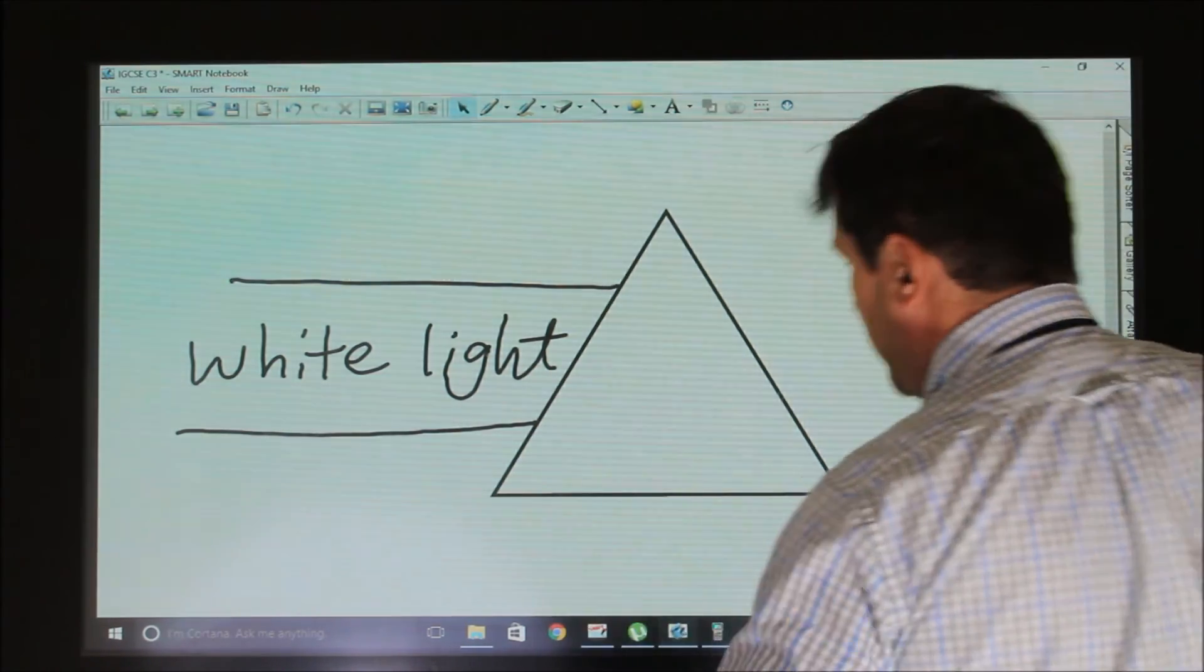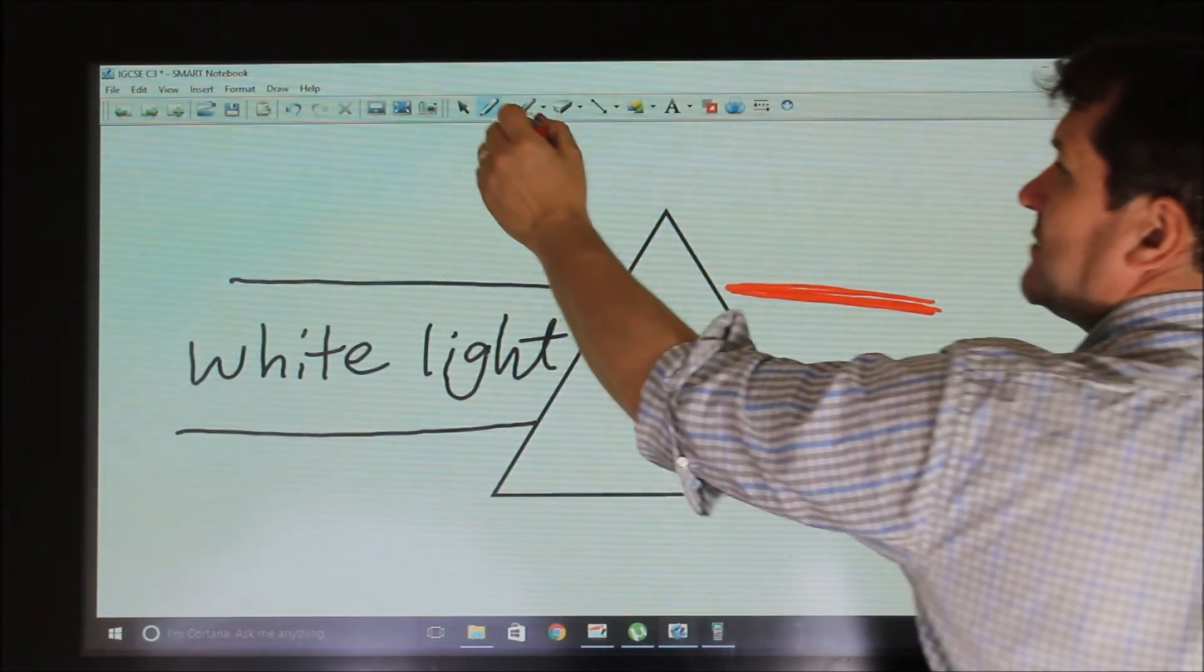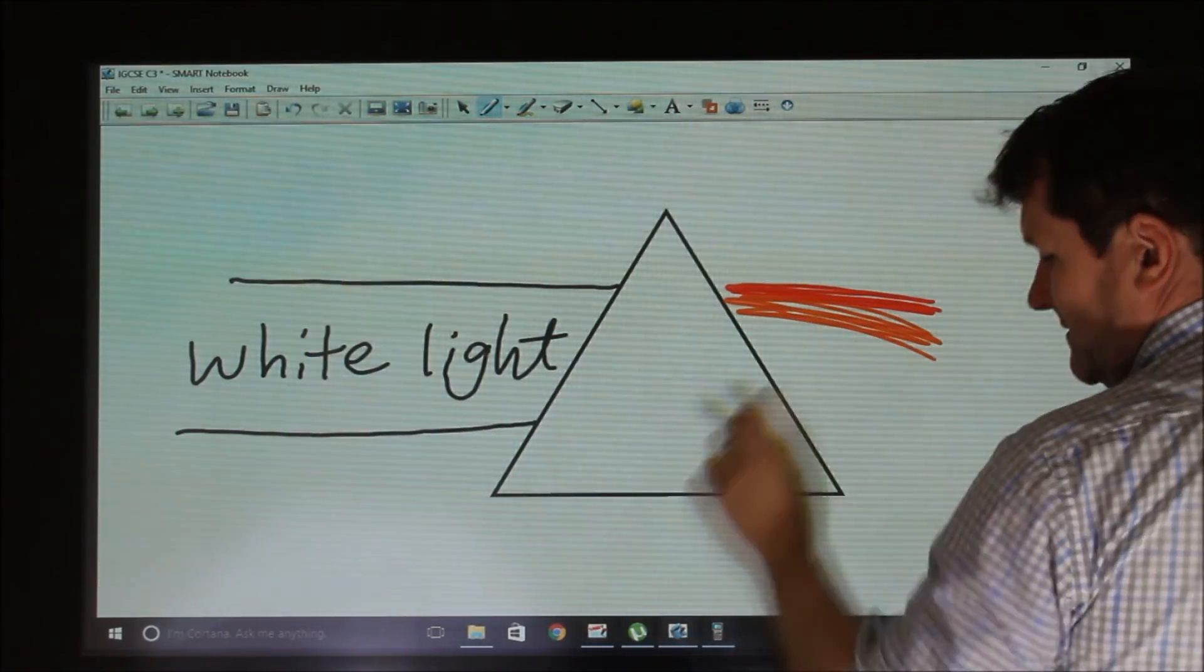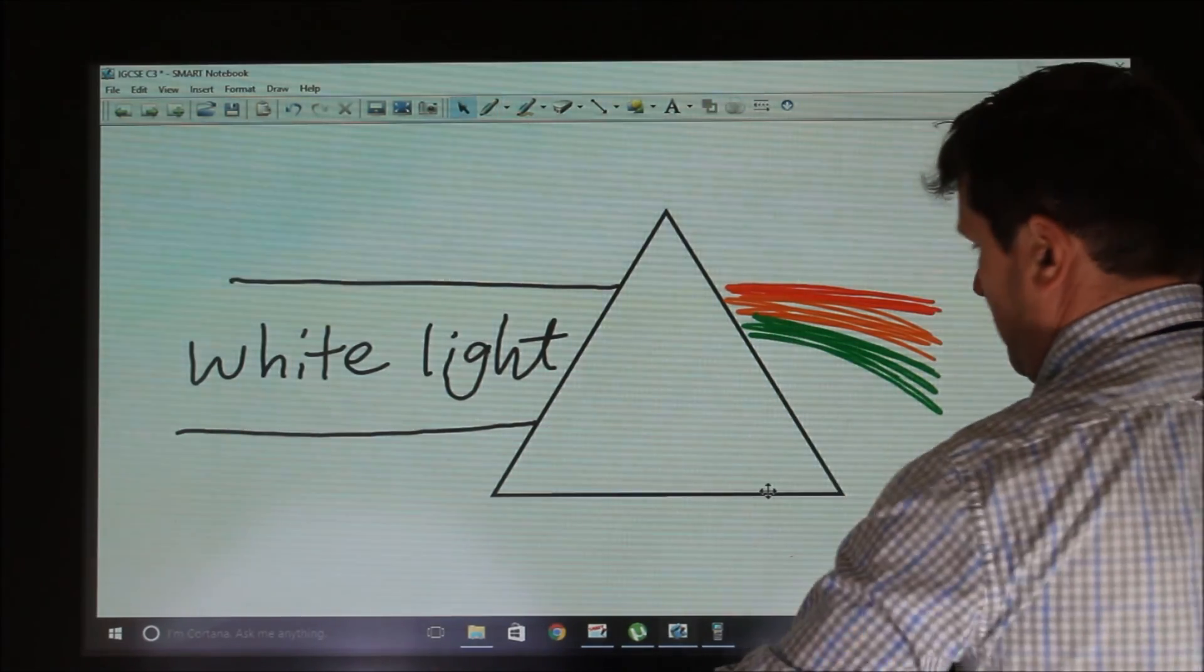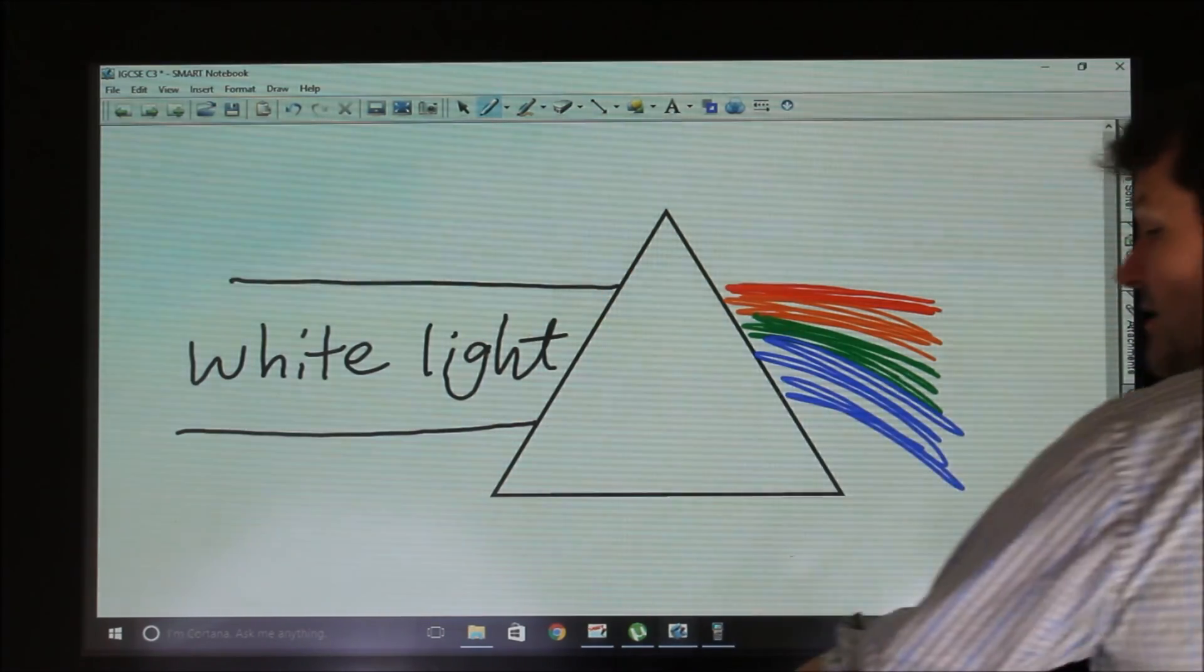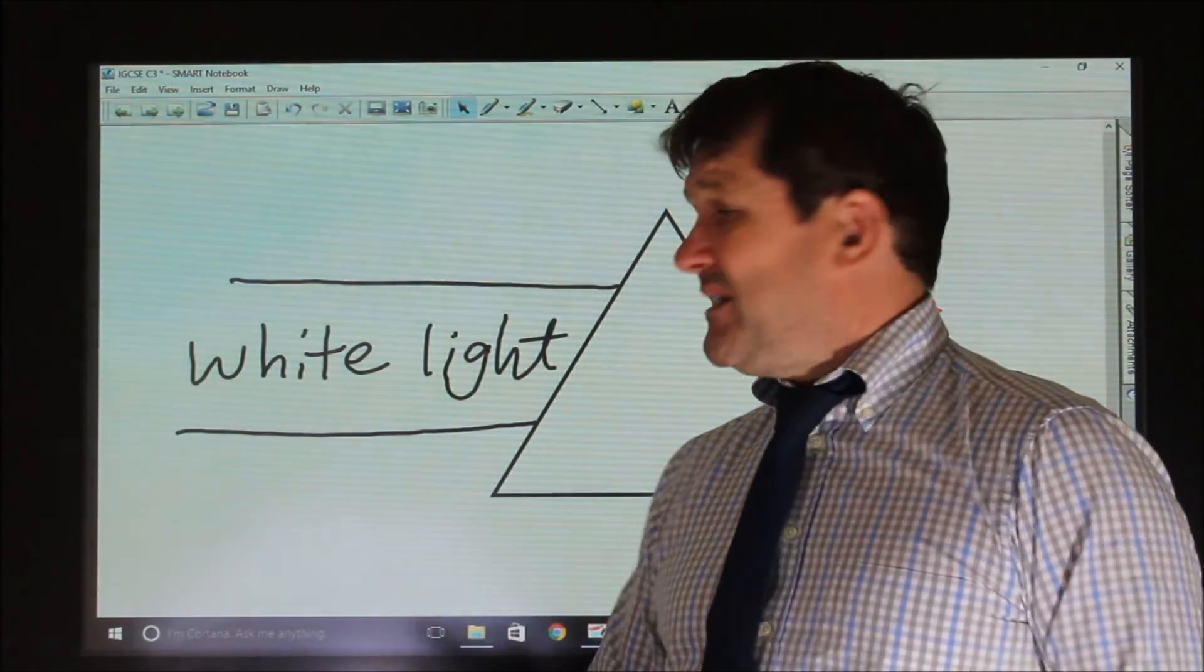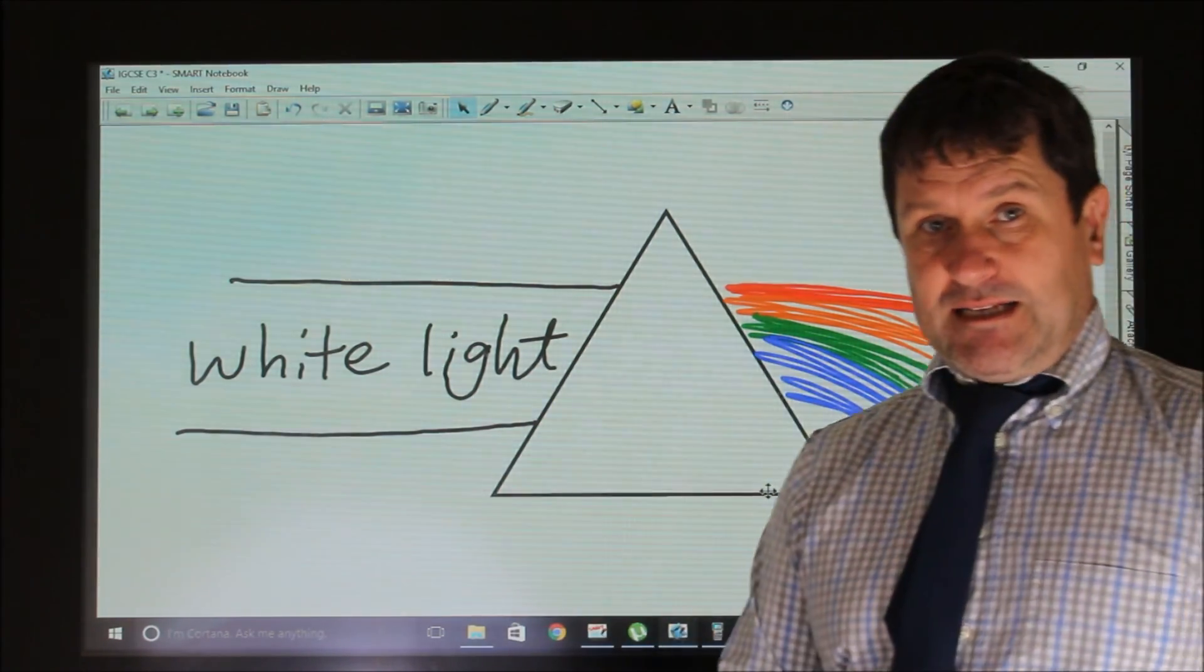So what happens is we end up with red, and it goes red, orange, yellow, green, blue, indigo, and violet. So we would get all the colors of the spectrum coming out red, orange, yellow, green, blue, indigo, and violet down at the bottom. That's called dispersion, and it's just caused by the fact that different colors refract by different amounts when they go into glass.